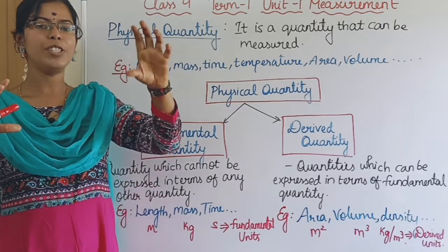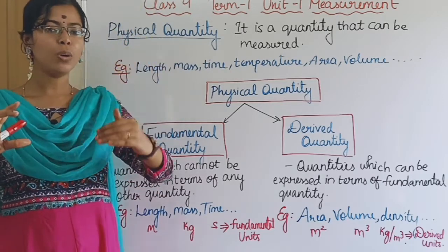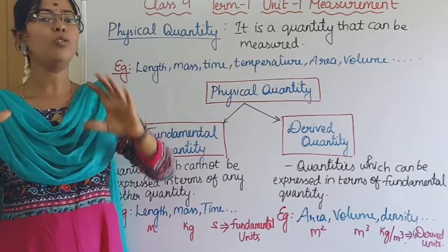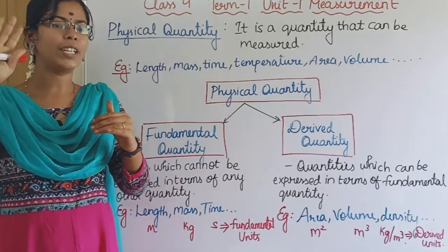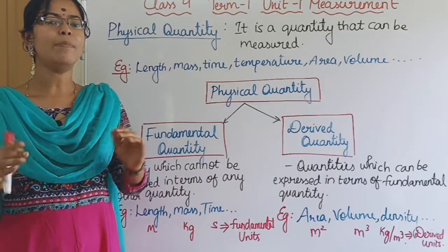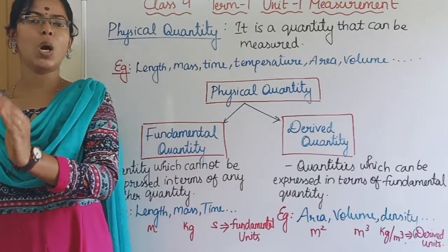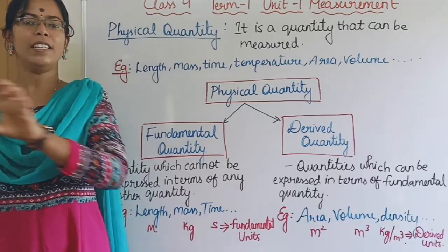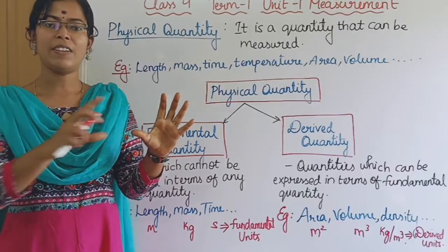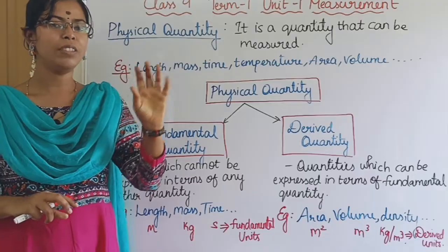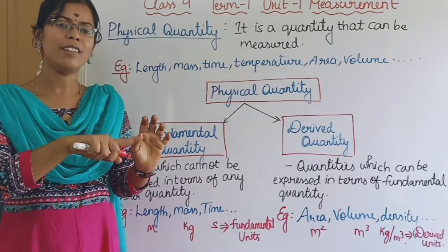For the ground floor, there is no 1st floor, 2nd floor, 3rd floor — so the ground floor has no derived quantity. For the body, let's take a cell. For the cell, there is a tissue, the organ, and the organ system. The cell is the base — the cell is the fundamental quantity. The tissue, the organ, the organ system is the derived quantity.